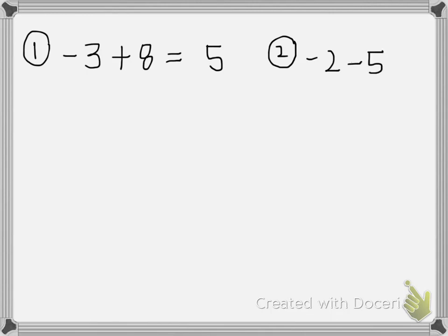What about negative two minus a five? Those are both negative numbers, so negative two minus five — those are the same signs, so we're going to add. Two plus five gives me a seven, and the signs on both of those are negative.